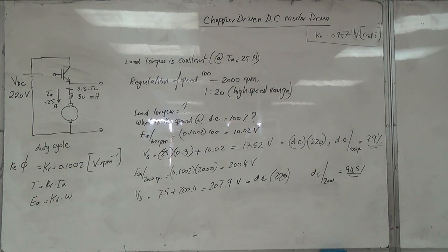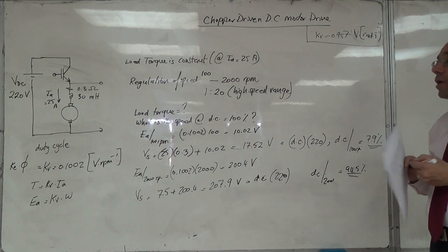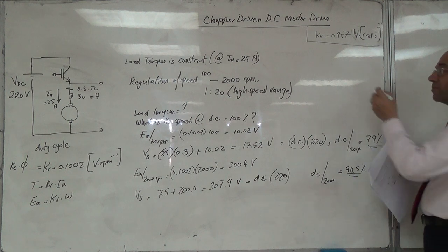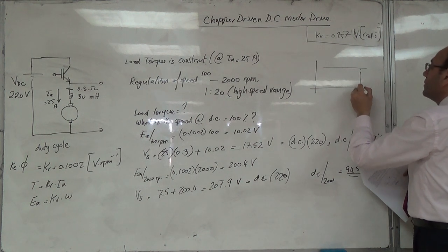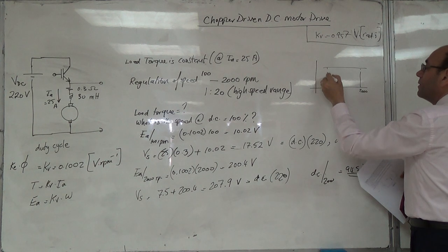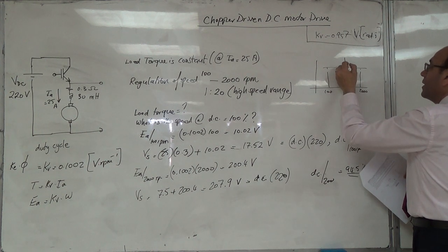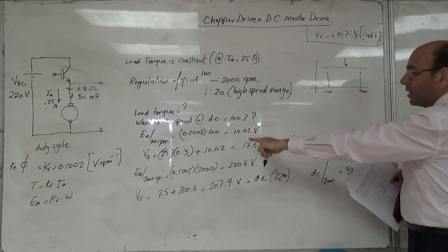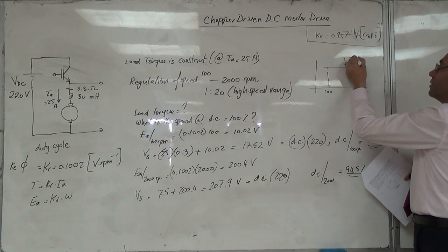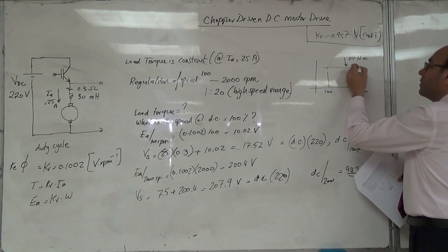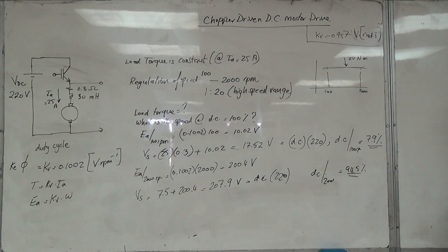So this is constant torque because the speed changed but nothing else changed. From 2000 RPM to 100 RPM, it stayed at 24 Newton meter, approximately 24.